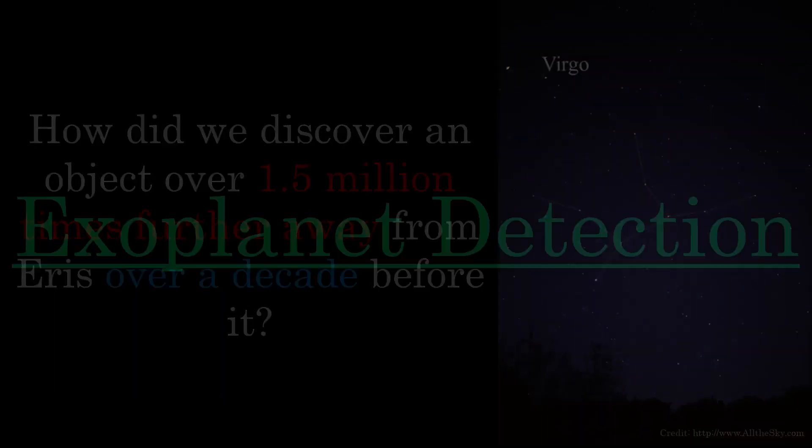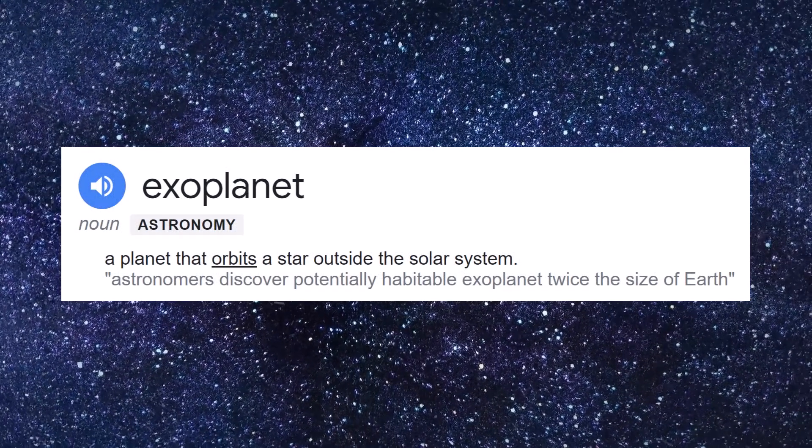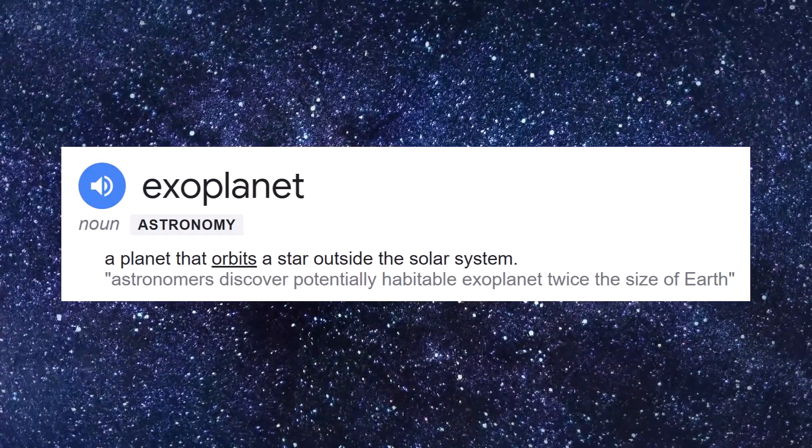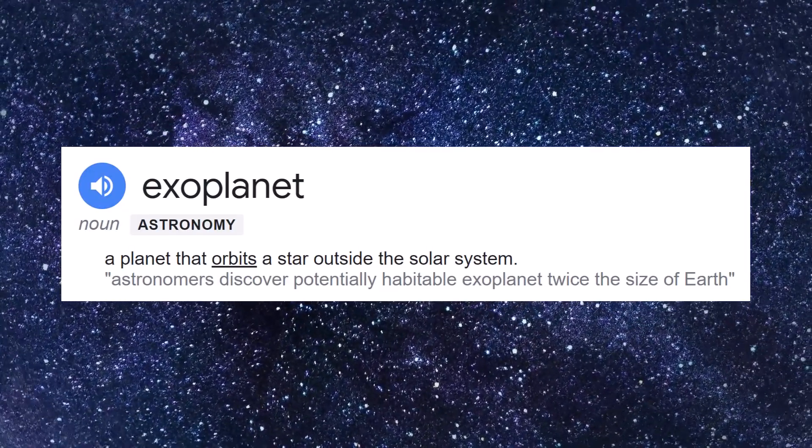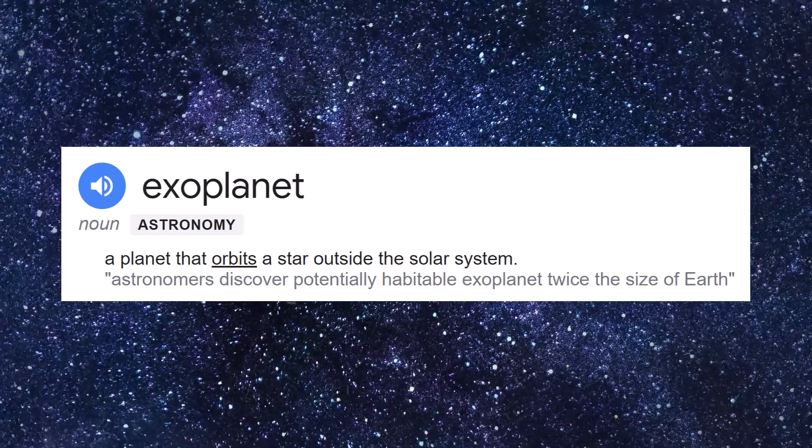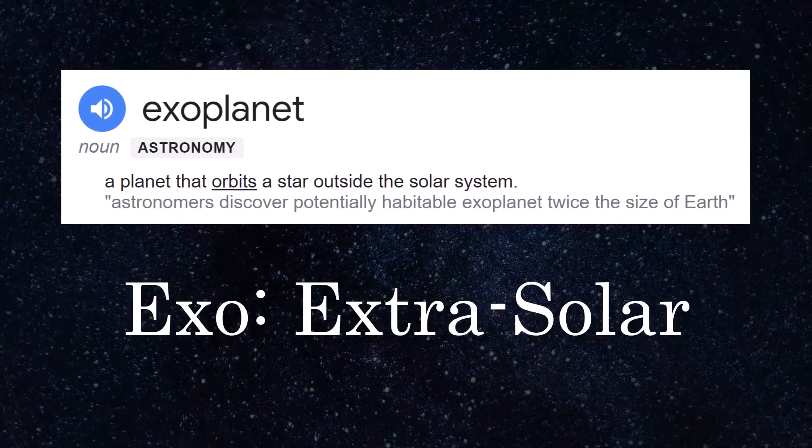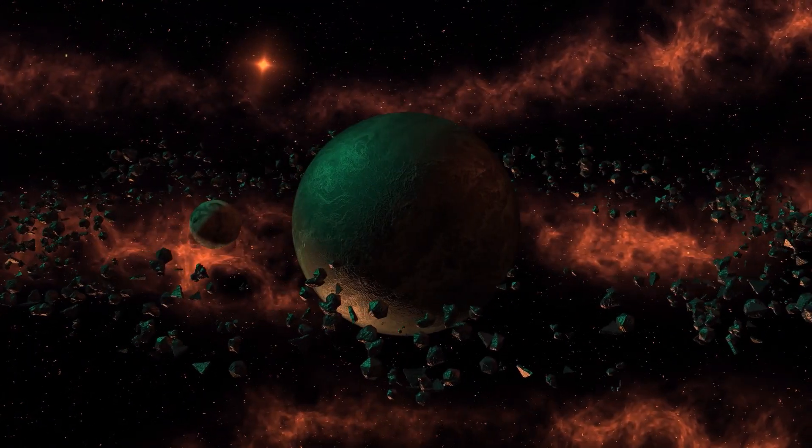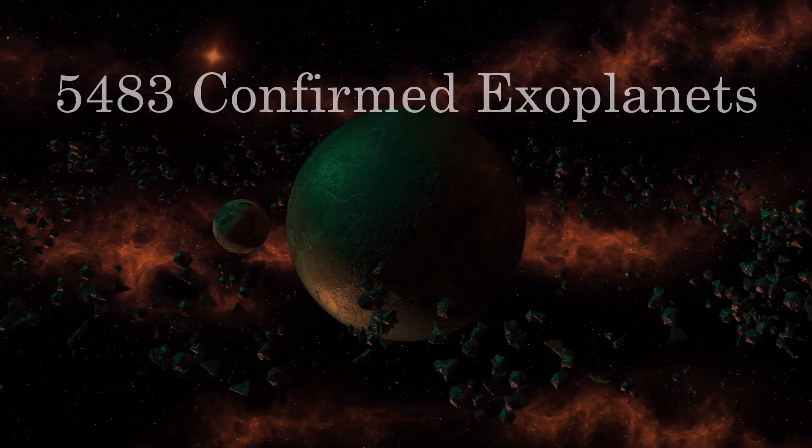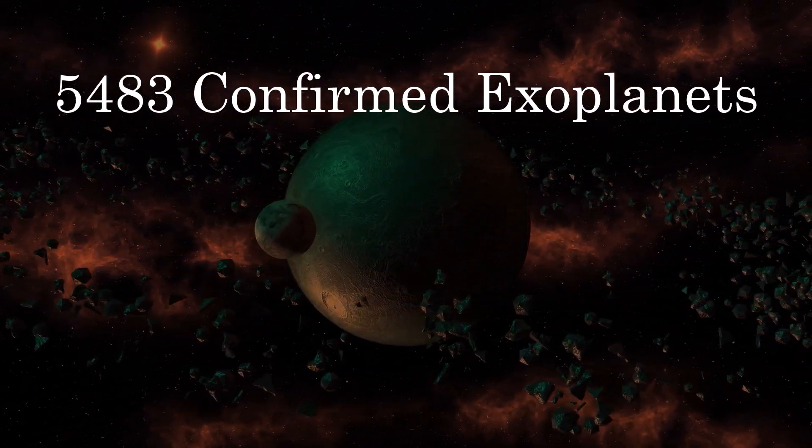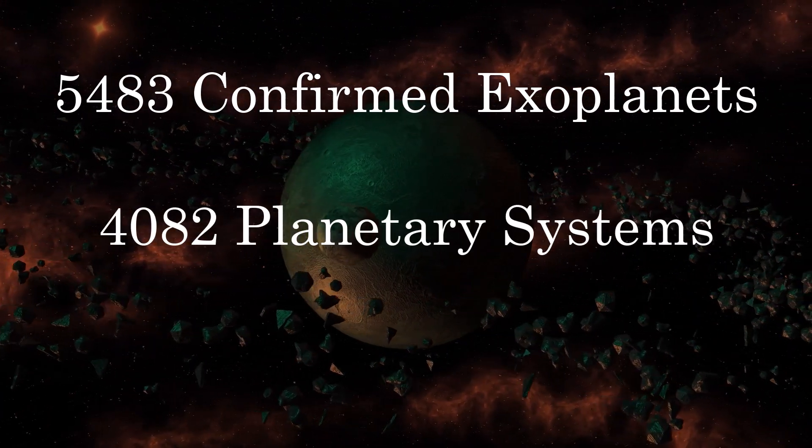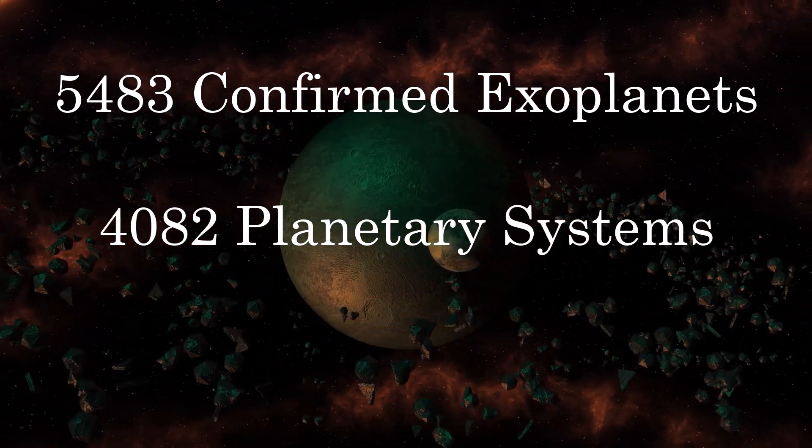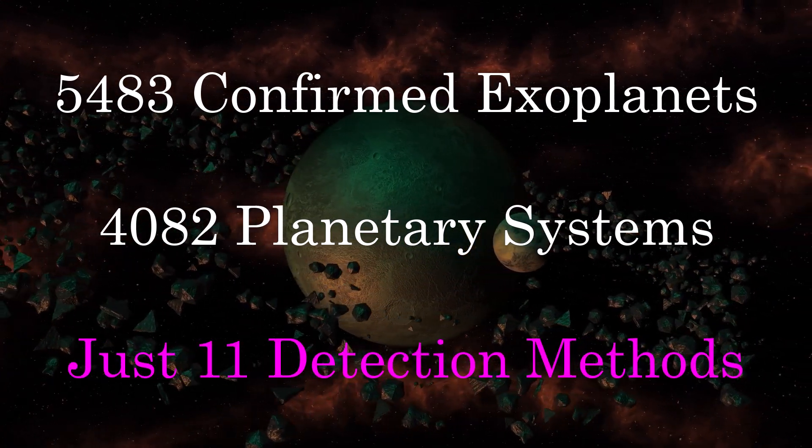It's time to talk about exoplanet detection. The word exoplanet is the name given to any object which fits the typical planet requirements but lies outside of our own solar system. That can be inferred by the prefix exo meaning extrasolar or beyond the Sun. As of August 2023, there have been 5,483 confirmed exoplanets in 4,082 planetary systems. Every single one of them was detected using one of just 11 different methods.